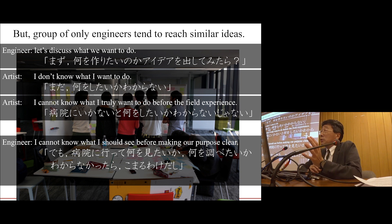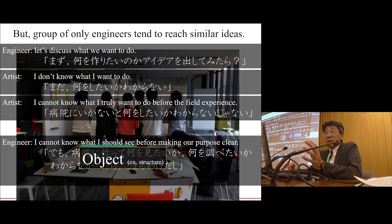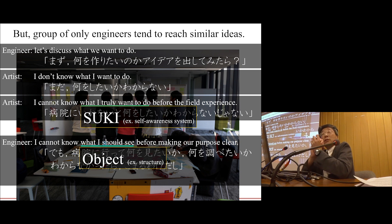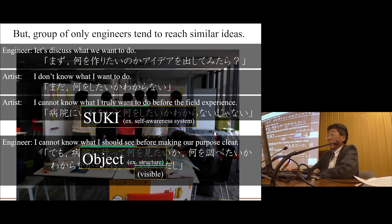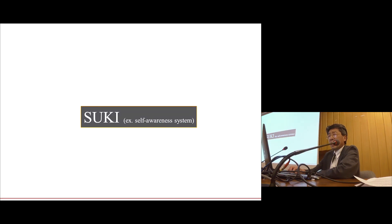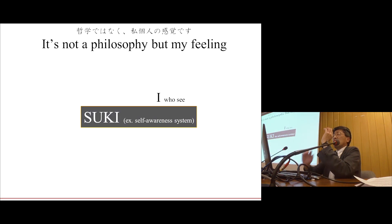So what is the difference? I think the engineers are searching for objects or structures, so the purpose doesn't find this. But I want to use the word 'suki.' Suki is a Japanese word — containing like and unlike. I think it's a self-awareness system. The object can be visible, but suki — the RNA system — cannot be. It's invisible. I'm not a philosopher, but I want to honestly ask this of myself.